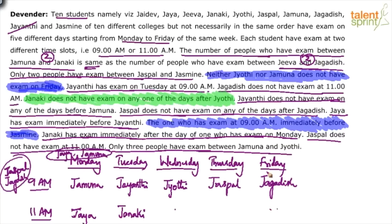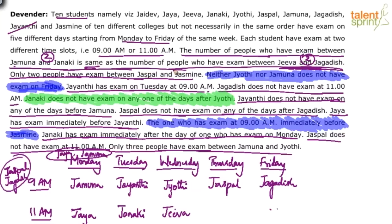With Jagdish at Friday 9am, two people between Jeeva and Jagdish — counting back: 11am Thursday and 9am Thursday — so Jeeva comes at Wednesday 11am. For Jaspal at Thursday 9am with two people between Jaspal and Jasmine: one and two slots after Jaspal brings Jasmine to Friday 11am. The remaining person, Jai Dev, fills the last open slot. The puzzle is solved.